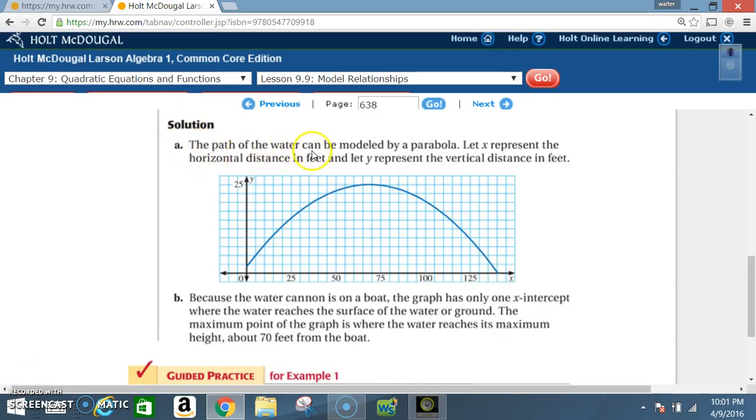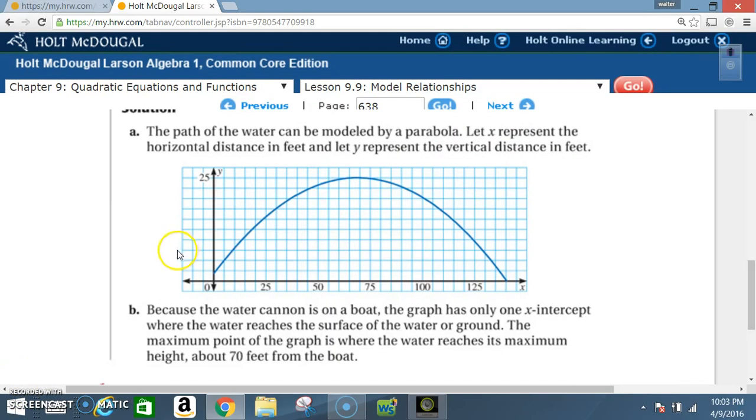Solution. A. The path of the water can be modeled by a parabola. Let X represent the horizontal distance in feet and let Y represent the vertical distance in feet. So in other words, they told you that the height, the maximum height it reached was 25 feet. So you know your vertex is going to be somewhere around there, 25 feet. Now he also told you that it went a distance of 140 feet. That's about right there.